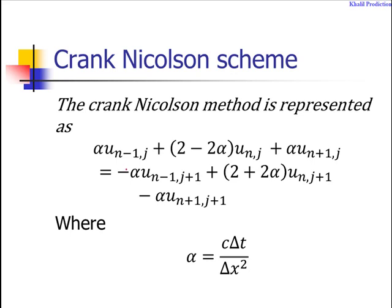Before the explanation, recall the discrete representation of the Crank-Nicolson method: alpha u_{n-1,j} + (2 - 2α)u_{n,j} + alpha u_{n+1,j} equals minus alpha u_{n-1,j+1} + (2 + 2α)u_{n,j+1} minus alpha u_{n+1,j+1}, where alpha equals c Δt divided by Δx squared.